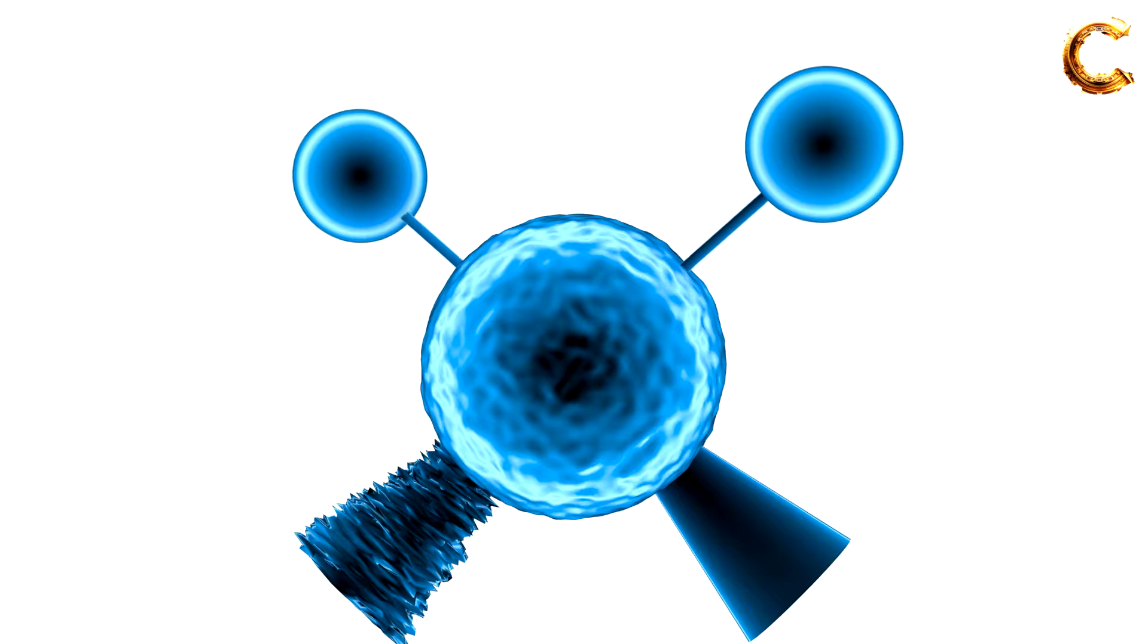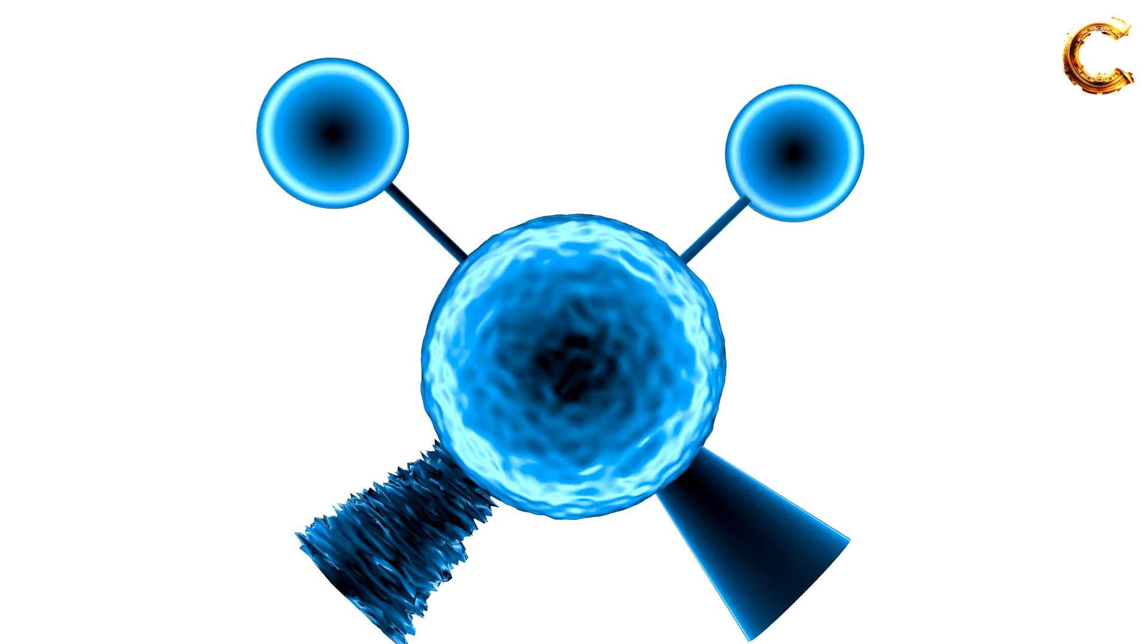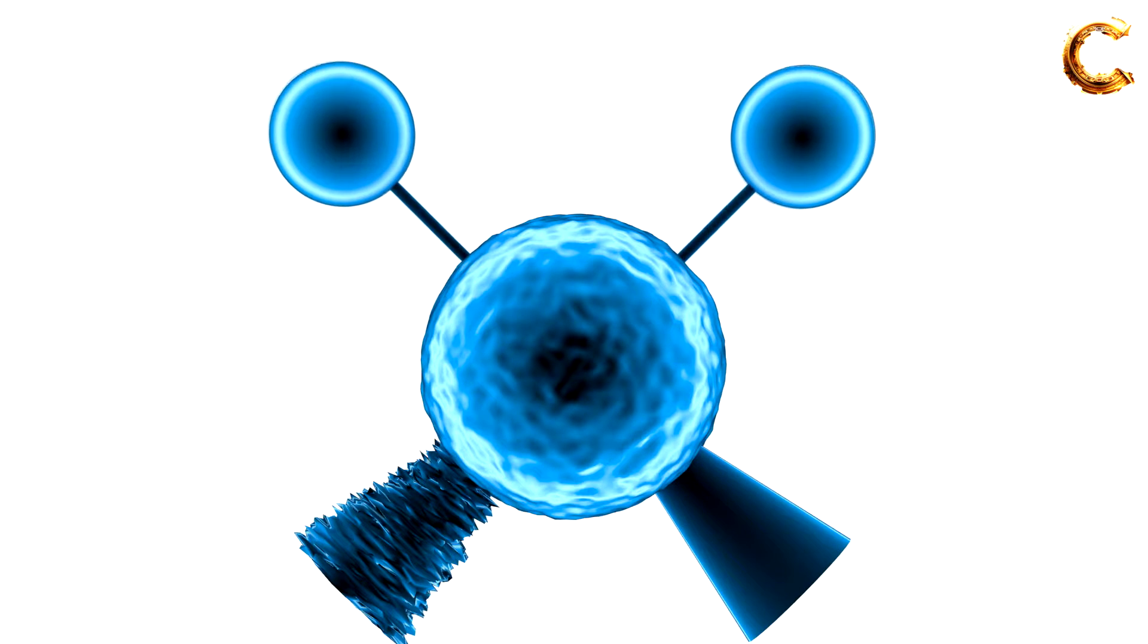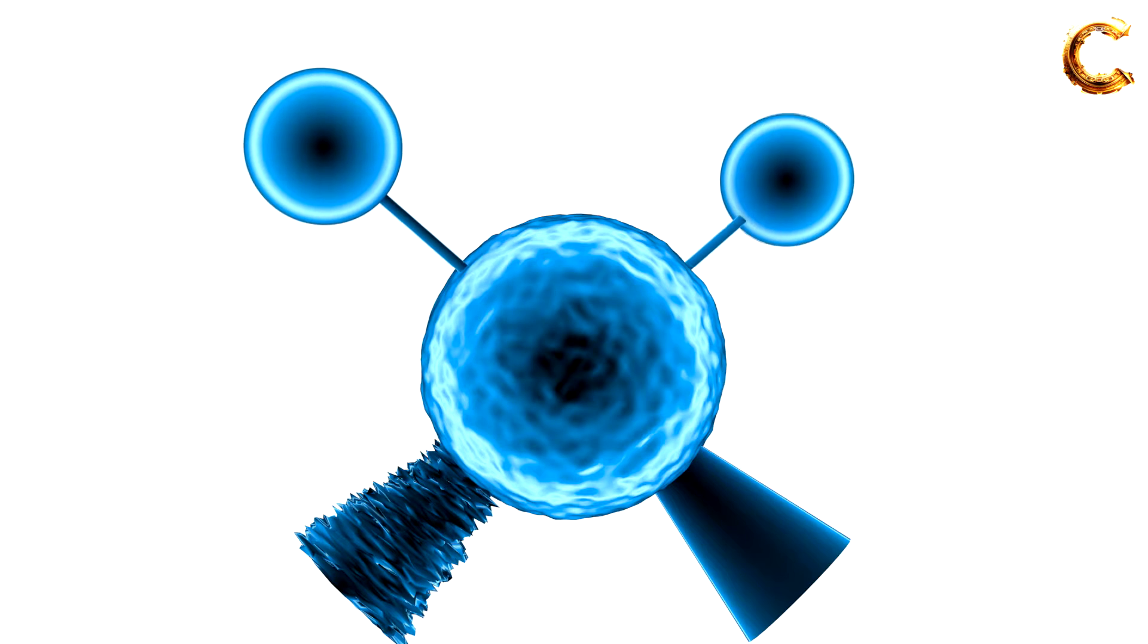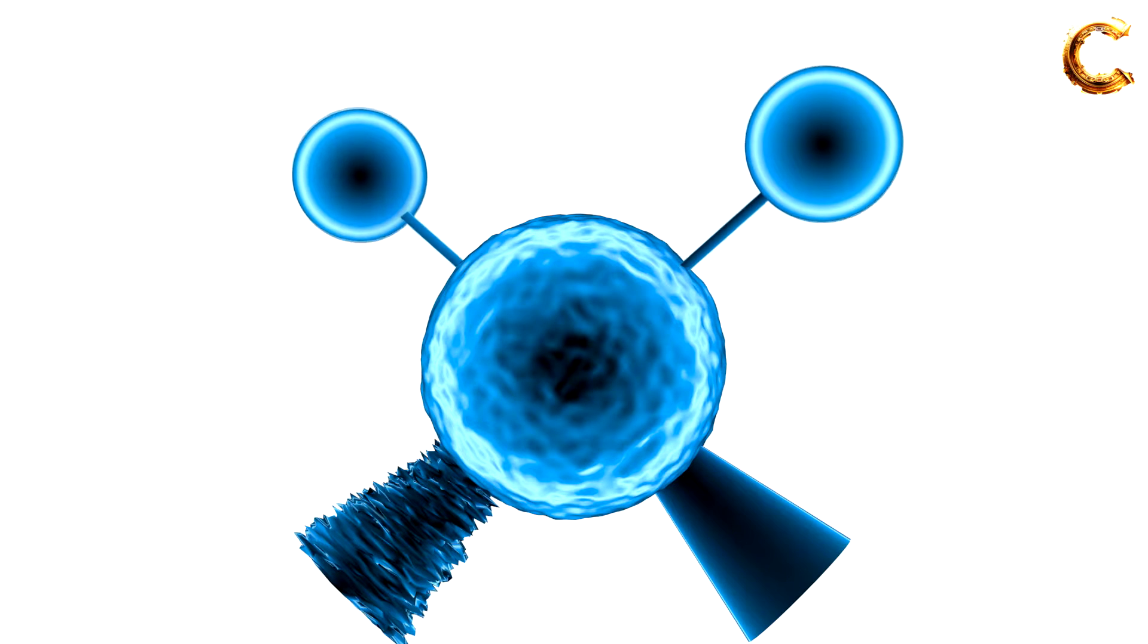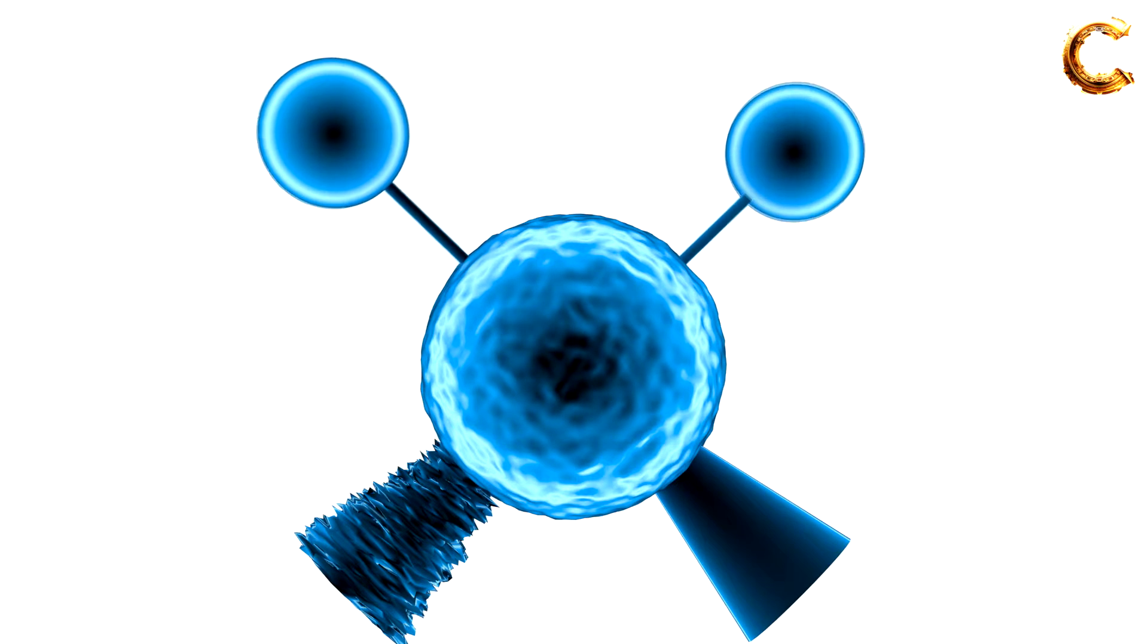Twisting vibration in infrared spectroscopy refers to a molecular motion where atoms or groups of atoms within a molecule rotate or twist around a particular axis. Twisting vibrations involve the rotation or torsional movement of certain parts of a molecule around an axis.